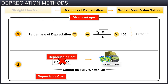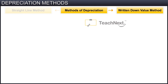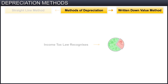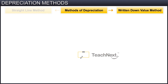However, this method also has a few disadvantages. Calculating the suitable rate of depreciation is a little difficult. Under this method, the depreciable cost cannot be fully written off to zero by the end of its useful life, because depreciation is taken as a fixed percentage on the book value. As the written down value method is recognized by the income tax laws and the straight line method is not, the written down value method is more widely used in practice. With this, you have completed the module on depreciation methods.